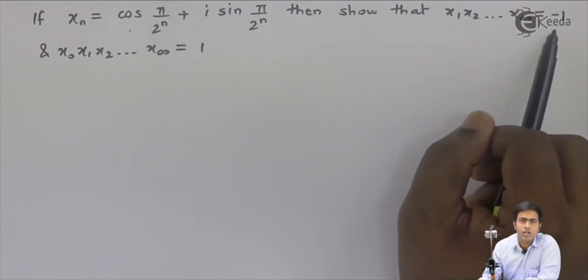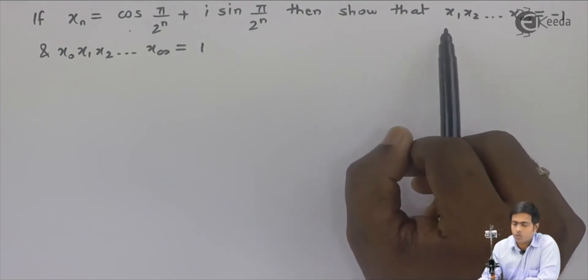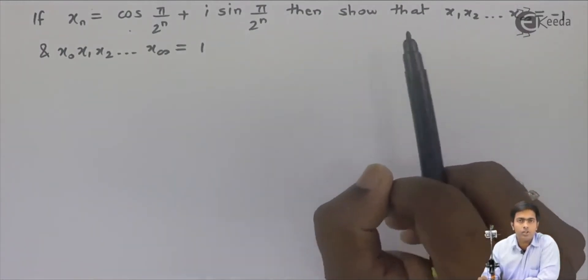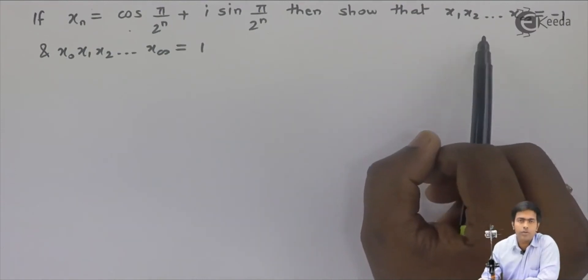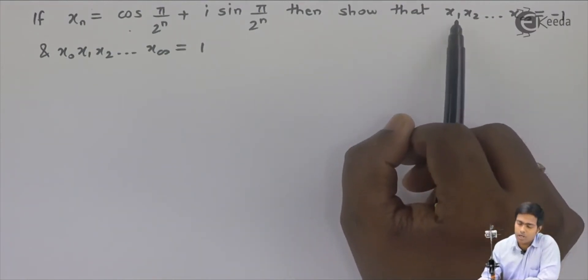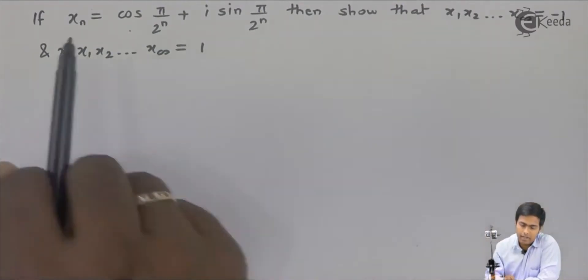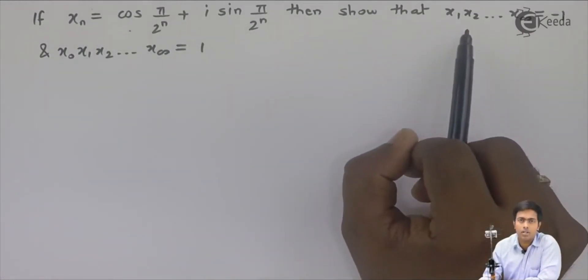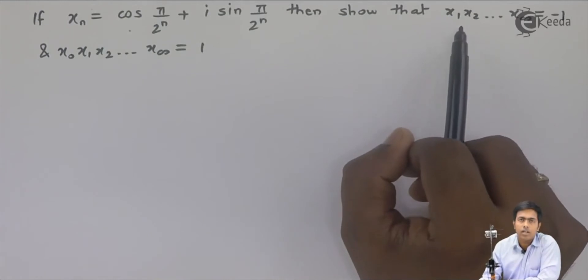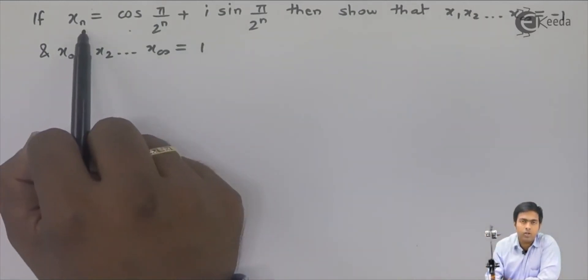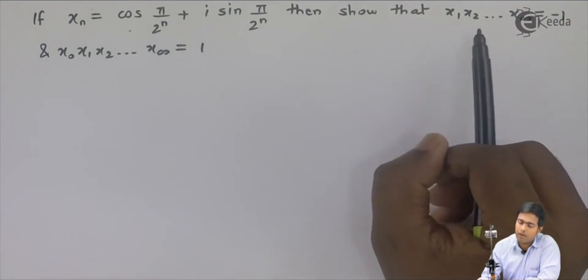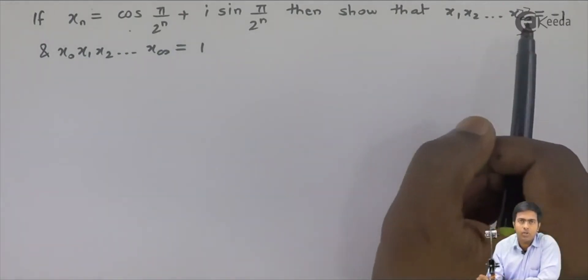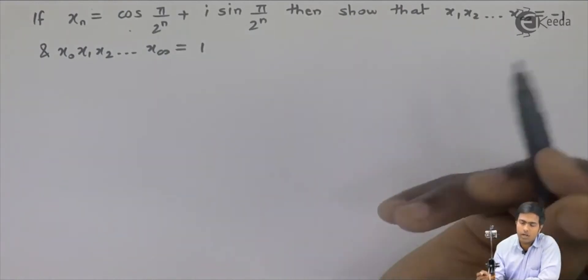To prove the first result we need to find out the values of x1, x2, x3 and so on. To find those values, we will substitute that particular number in place of n to get each particular term. So if I want to find x1 I will substitute n=1; similarly for x2 I will replace n by 2. So let's start.